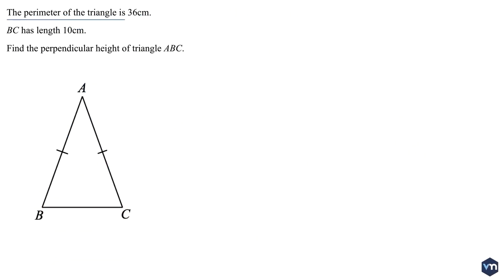The perimeter of the triangle is 36 cm. BC has length 10 cm. Find the perpendicular height of triangle ABC.